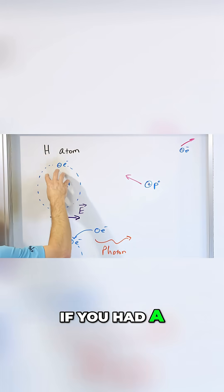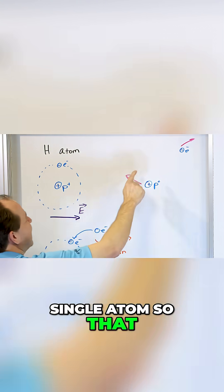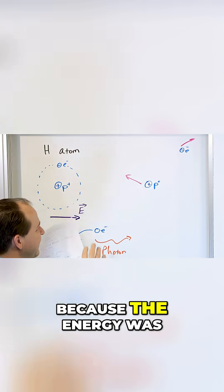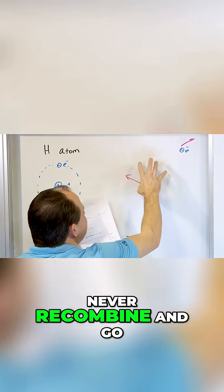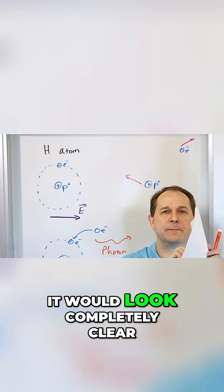In other words, if you had a gas full of hydrogen and you ionized every single atom so that every atom was a free electron and a free proton and none of these ever recombined because the energy was so high they could never recombine and go back into orbit like this, then we would never see anything. It would look completely clear.